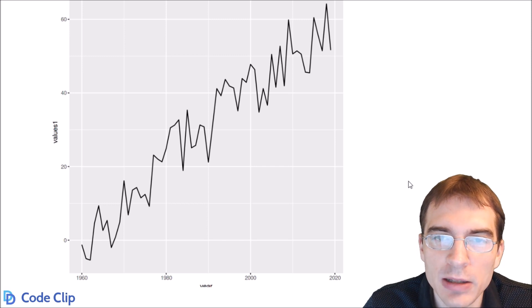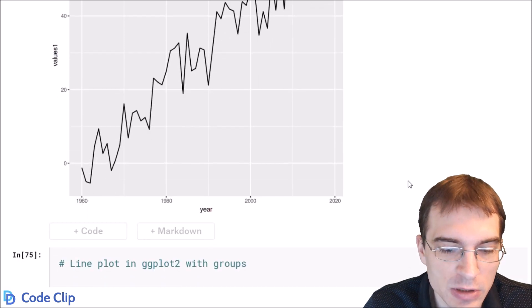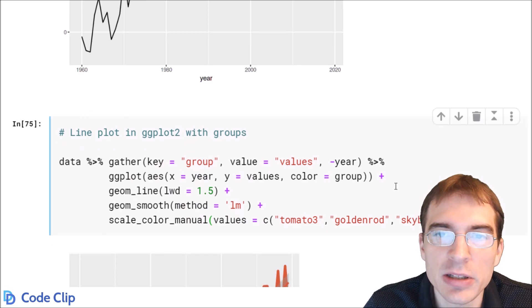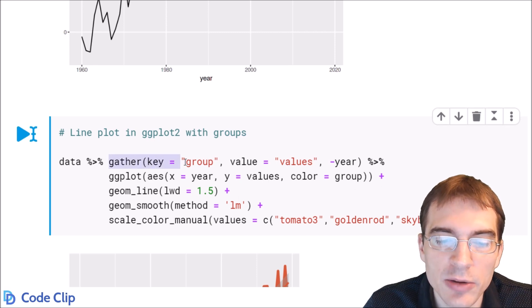I'll just do one final line plot with some groups and some other options to show you the kinds of things you can do with line plots. When we generated the data we actually made three different data sets. We're going to start by gathering those together to create three different groups.